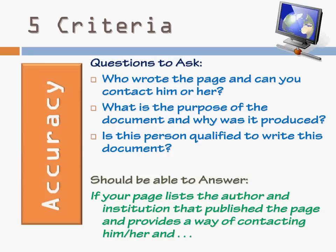The homepage is definitely the best location to find this information. You also want to make sure that you know the difference between an author and a webmaster. An author is someone who writes or constructs the document; a webmaster is a person who designs or maintains a website. An author has background in the subject area, has the qualifications, the degree. A webmaster is just someone who is very good at maintaining webpages and does not have the background knowledge. If your page lists the author and institution that published the page and provides a way of contacting him or her, then you have the first step of ensuring the webpage's accuracy.